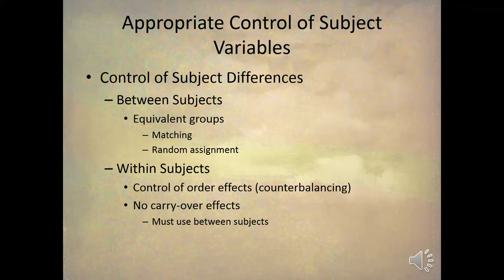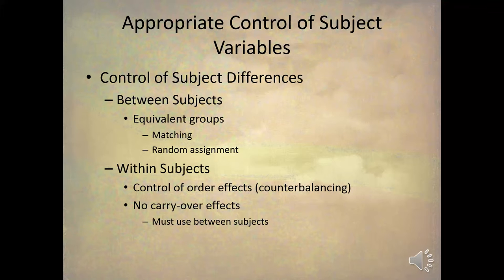Then there are also carry-over effects. A carry-over effect is when one condition is so extreme that it affects the behavior of every condition after it. An example is giving a subject a drug — if I give you a drug and put you through one condition, you can't just say the drug no longer works and move to the next condition, because it's still in the bloodstream. That's a very common example of a carry-over effect: putting subjects on some type of drug will affect their behavior for every subsequent condition. When you have carry-over effects, there's nothing you can do but use between-subjects designs.